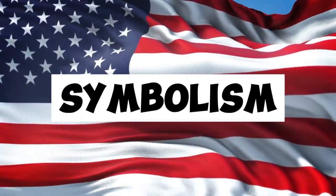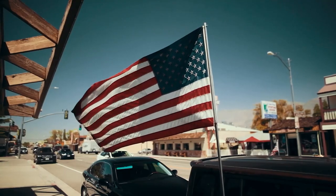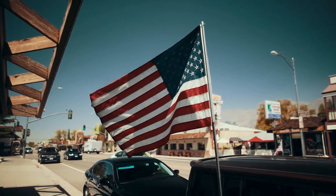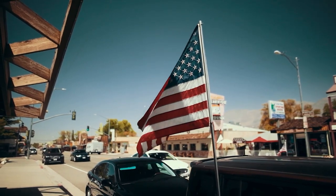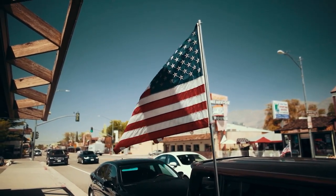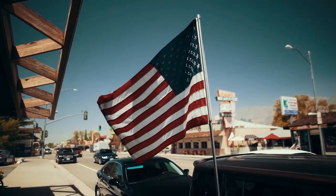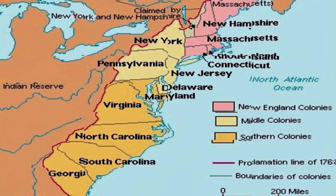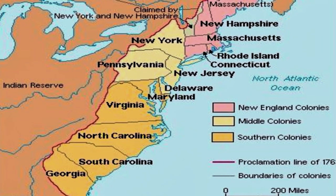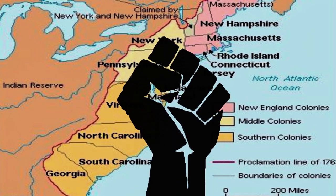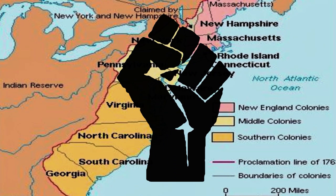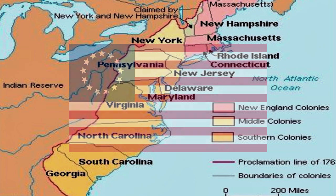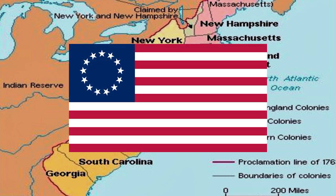Now let me tell you a little about the symbolism of the flag. Firstly, there are always 13 red and white stripes — there were 13 of them on all 27 versions of the U.S. flag. As it's easy to guess, the stripes designate the colonies that gained independence from the British Empire, creating the United States.